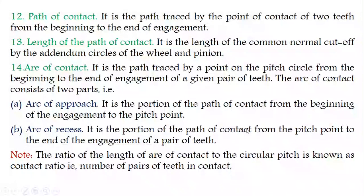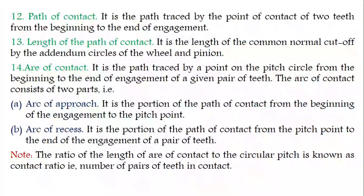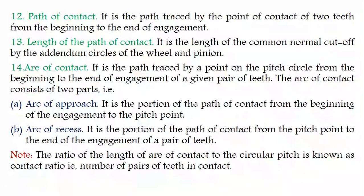Path of contact is the path traced by the point of contact of two teeth from the beginning to the end of the engagement. Length of path of contact is the length of the common normal cut off by the addendum circles of the wheel and pinion. The larger gear is called the wheel or gear, and the smaller gear is called the pinion.